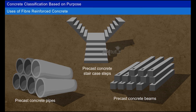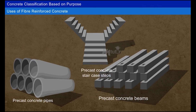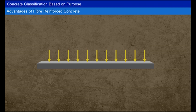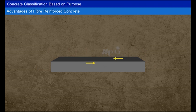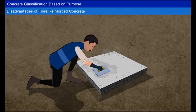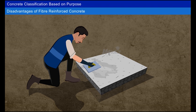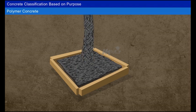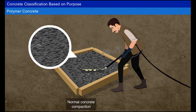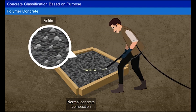Advantages of fiber reinforced concrete: flexural strength is high and it has high shearing capacity. Disadvantages: cost is high, and the finishing of fiber reinforced concrete surface is difficult. Due to improper compaction and high water-cement ratio, normal concrete consists of air voids and water voids, which reduce the strength of concrete.